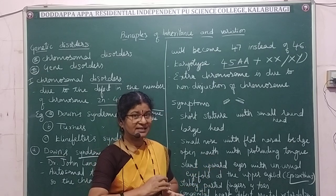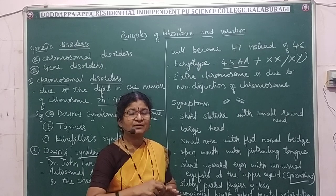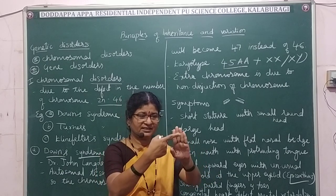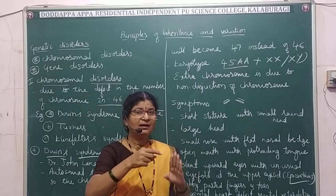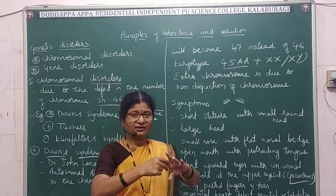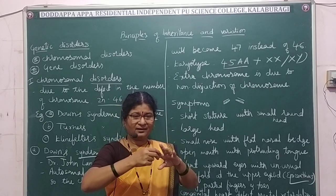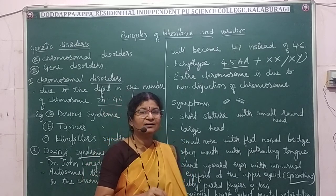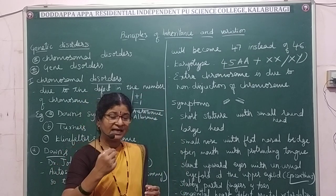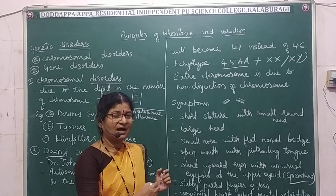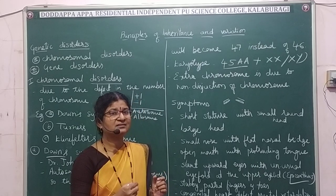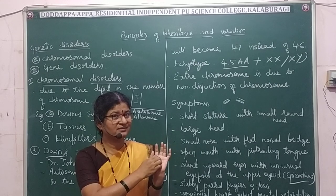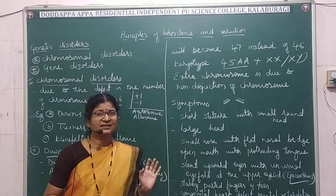The fingers and toes are stubby and situated apart with gaps between them. There is a congenital heart defect present from birth, and the child has mental retardation with a low IQ. The palm also shows characteristic foldings called palm crease. These are the main characters seen in Down syndrome.